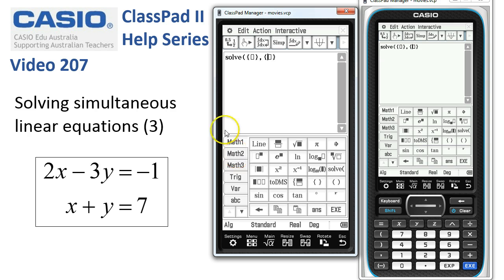Now, what we're going to do is in the first list, we're going to put in the two equations that need solving, which in this case are 2x subtract 3y is equal to negative 1.